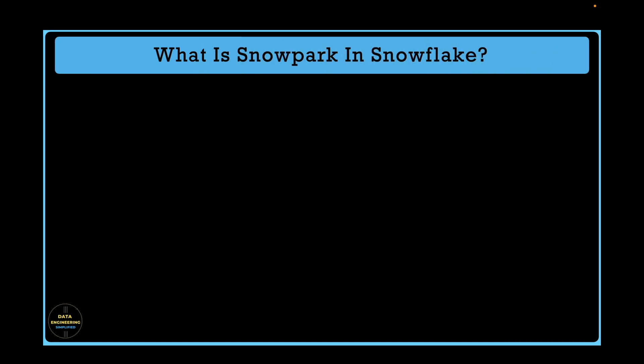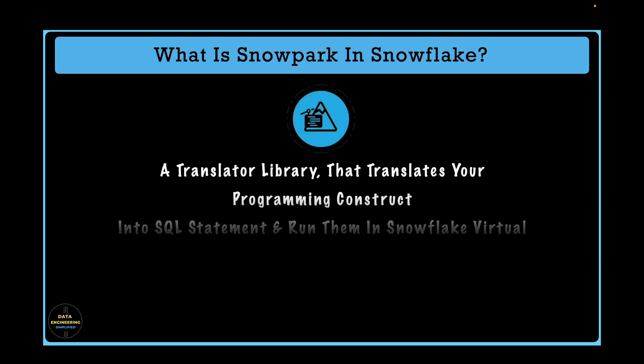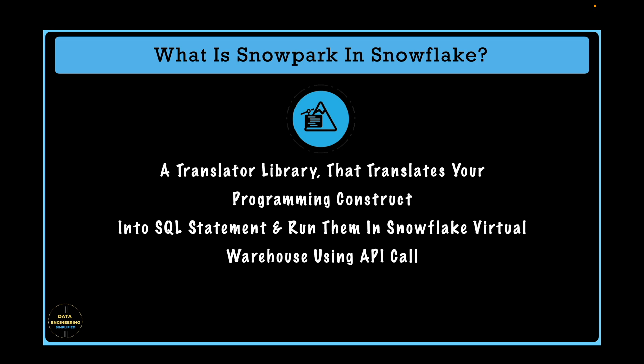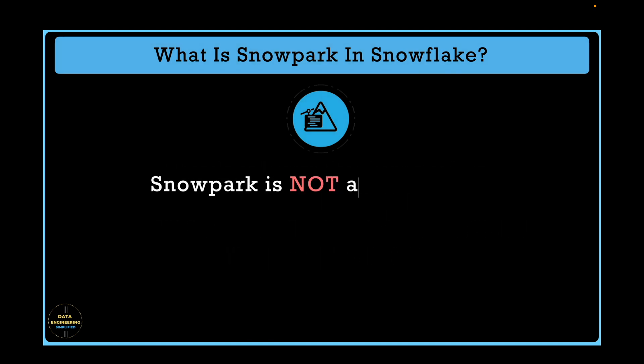So let's start. Snowflake Snowpark, in simple terms, is a translator library that translates your programming constructs — be it Python, Java, or Scala — into SQL statements and runs them in a Snowflake Virtual Warehouse using API calls. It is not a framework like Apache Spark, neither is it a direct substitute of Apache Spark. But it can achieve the same goal as Apache Spark when it comes to data processing and data manipulation at scale.